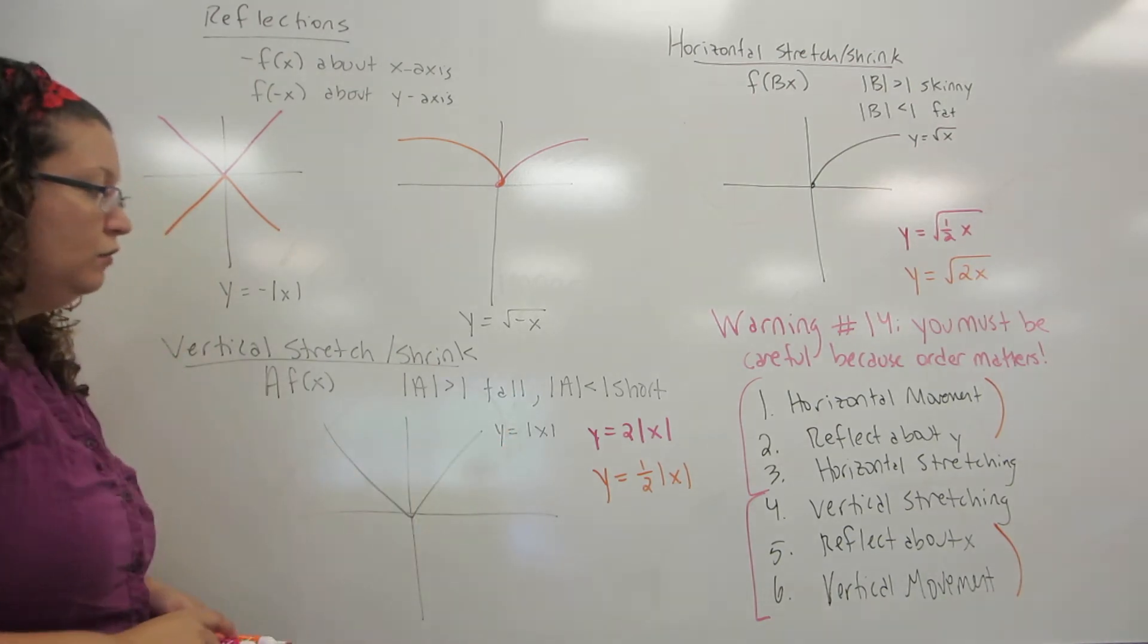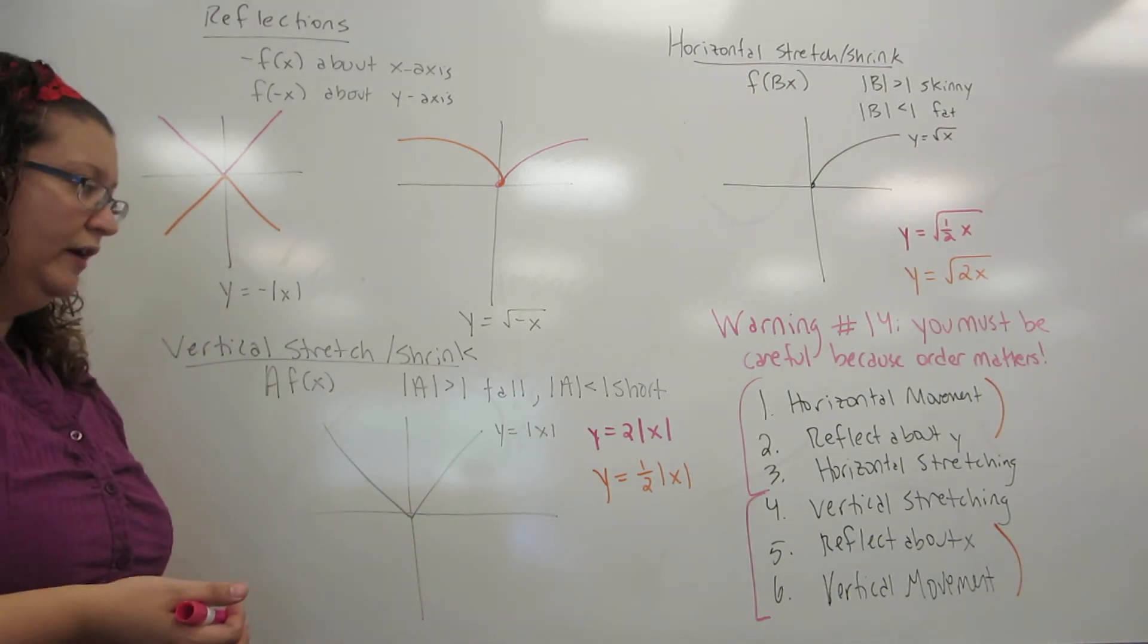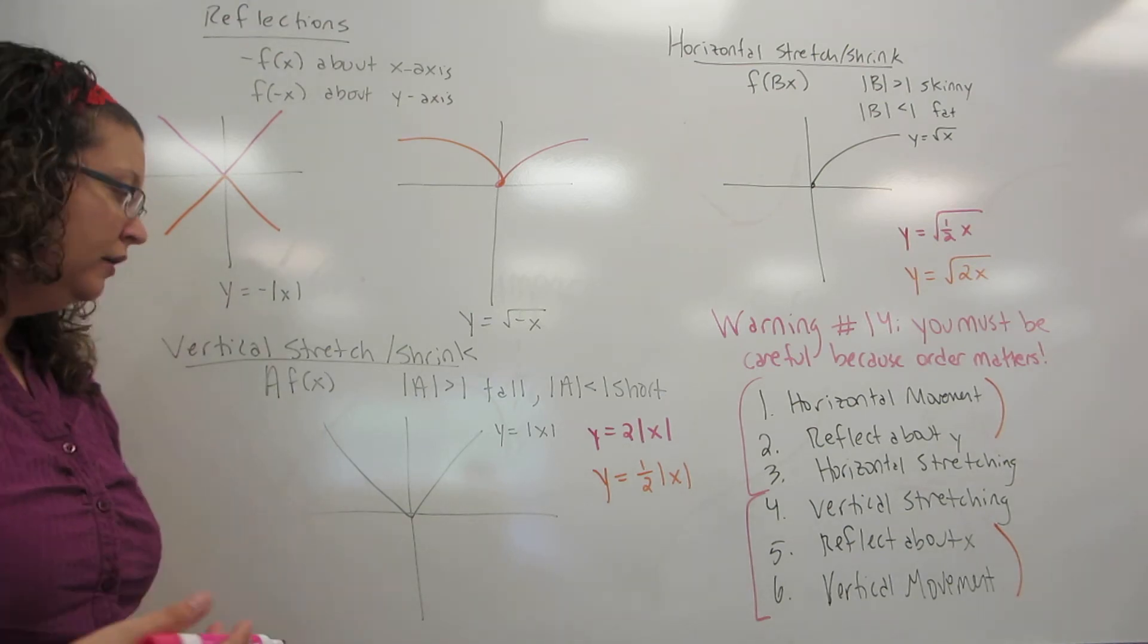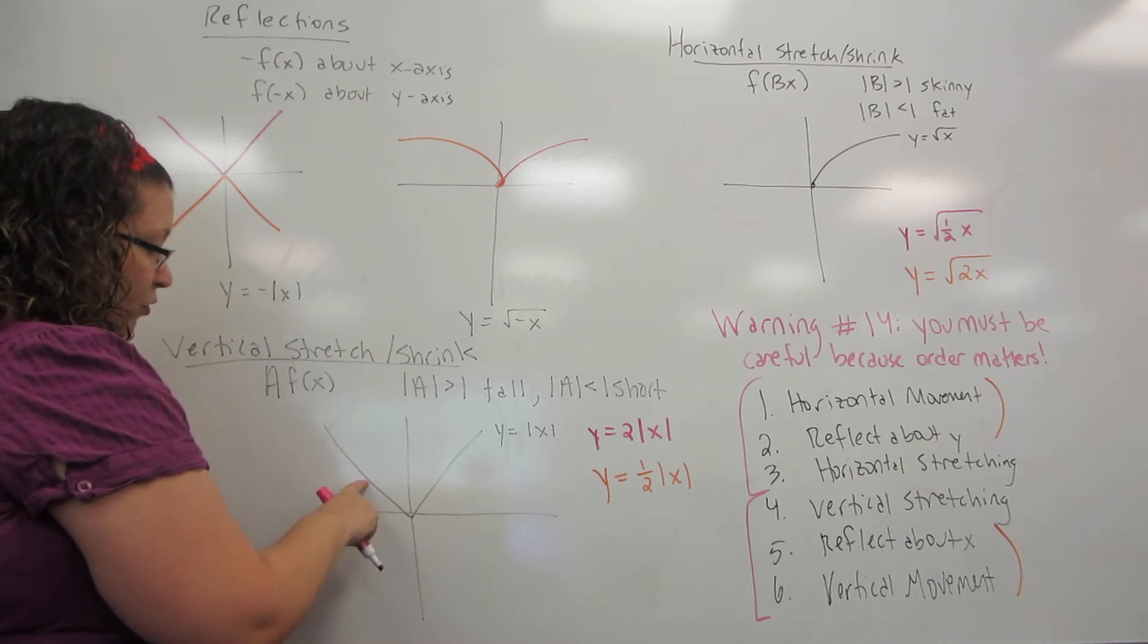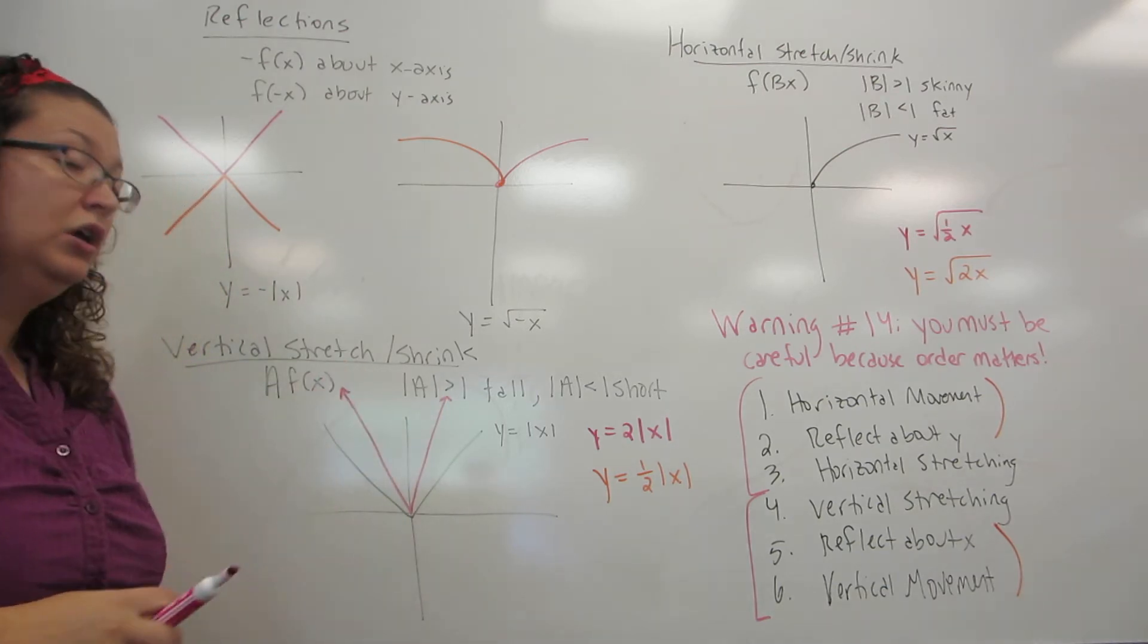So we have y equals the square root of x, and the first example is twice the square root of x. Because two is bigger than one, this is going to make it taller by a factor of two. So this has the effect of every point its y-coordinate is doubled, and the graph gets taller.